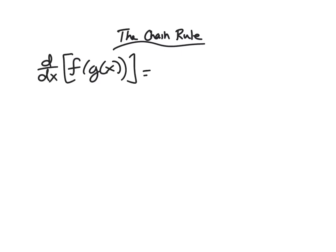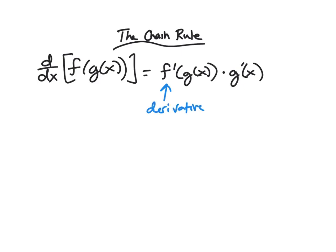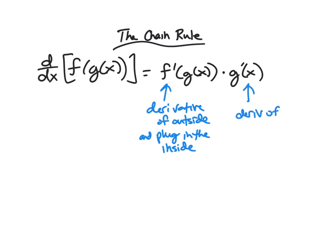The chain rule says that the derivative of f of g of x is f prime of g of x times g prime of x. The way I usually think of this is: take the derivative of the outside and plug in the inside. By outside and inside, I mean outside function f and inside function g. And then we multiply by the derivative of the inside function.